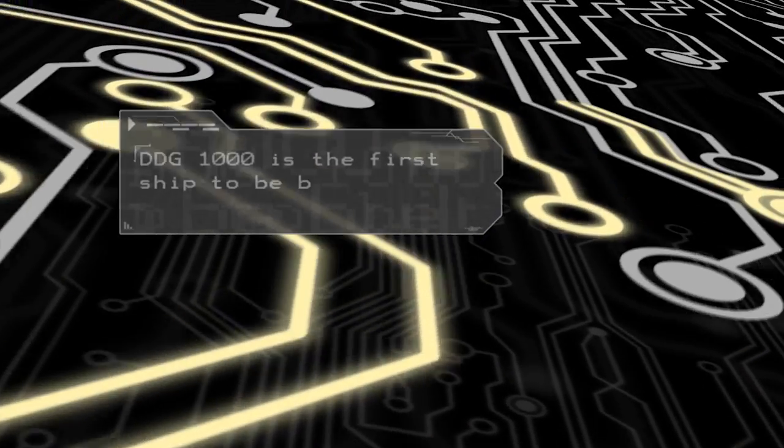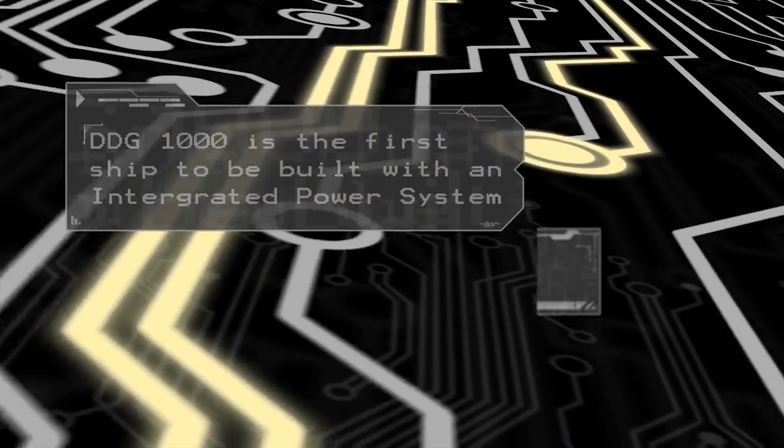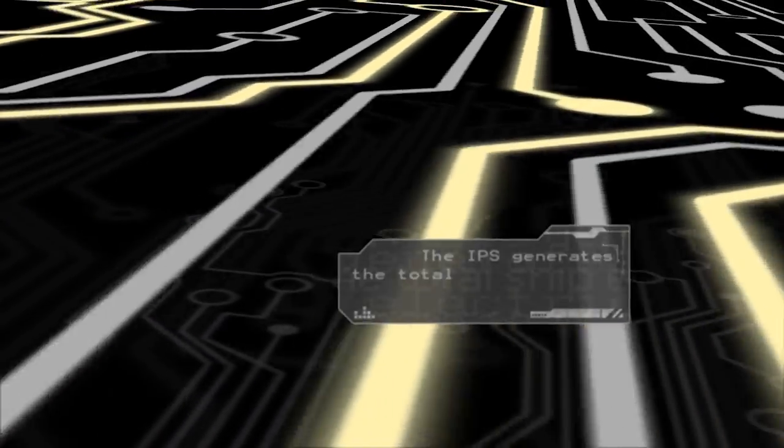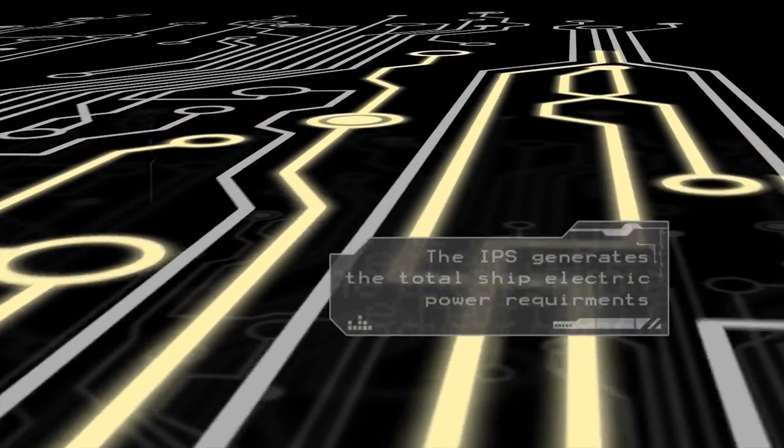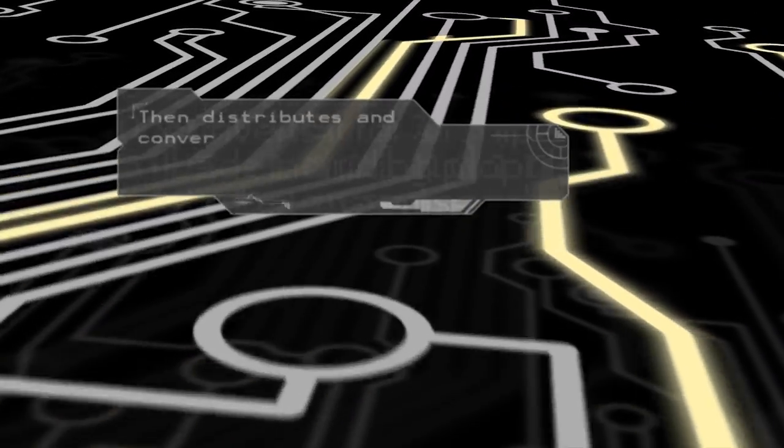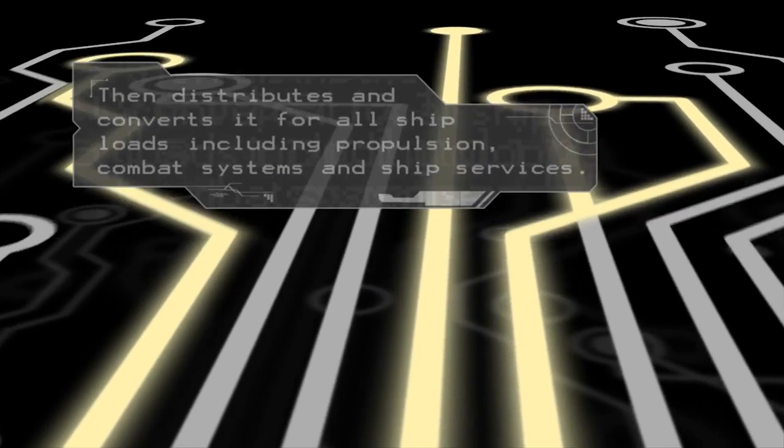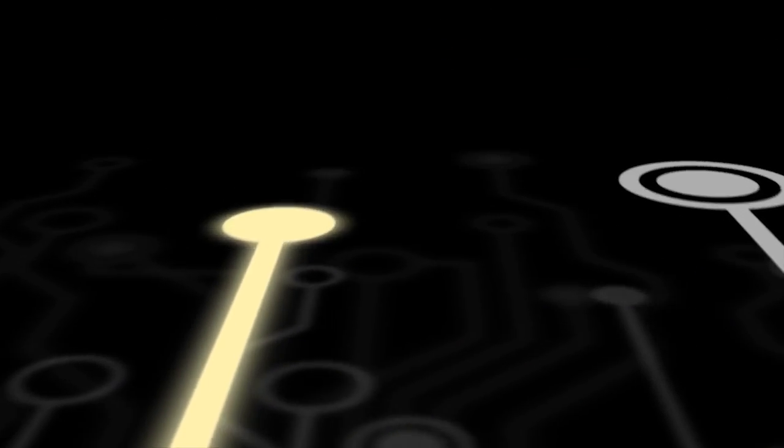DDG-1000 is the first ship built with an integrated power system. The IPS generates the total ship electrical power requirements, then it distributes and converts it for all ship loads, including propulsion, combat systems, and ship services.